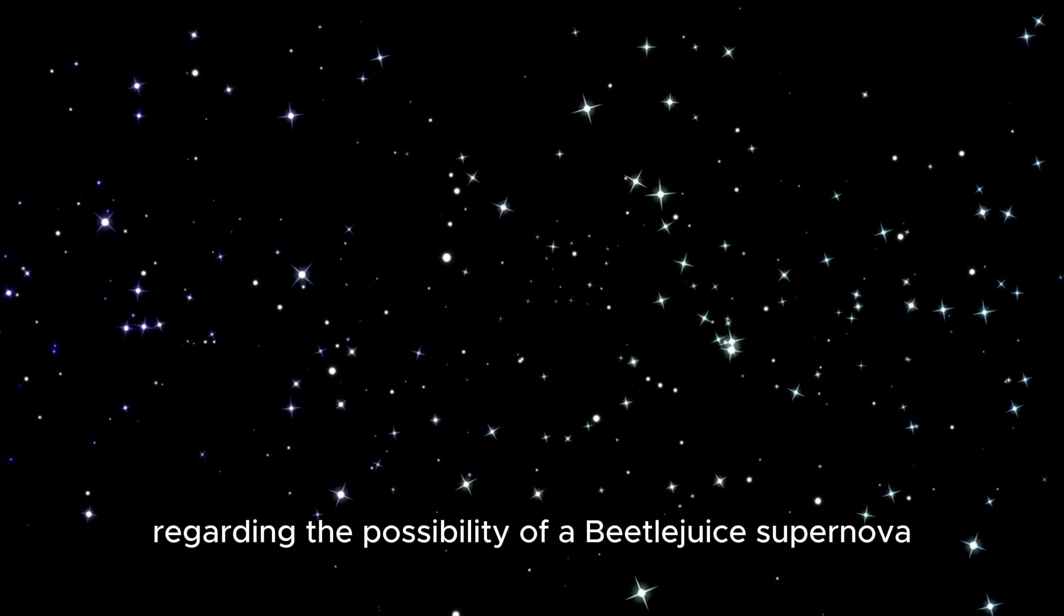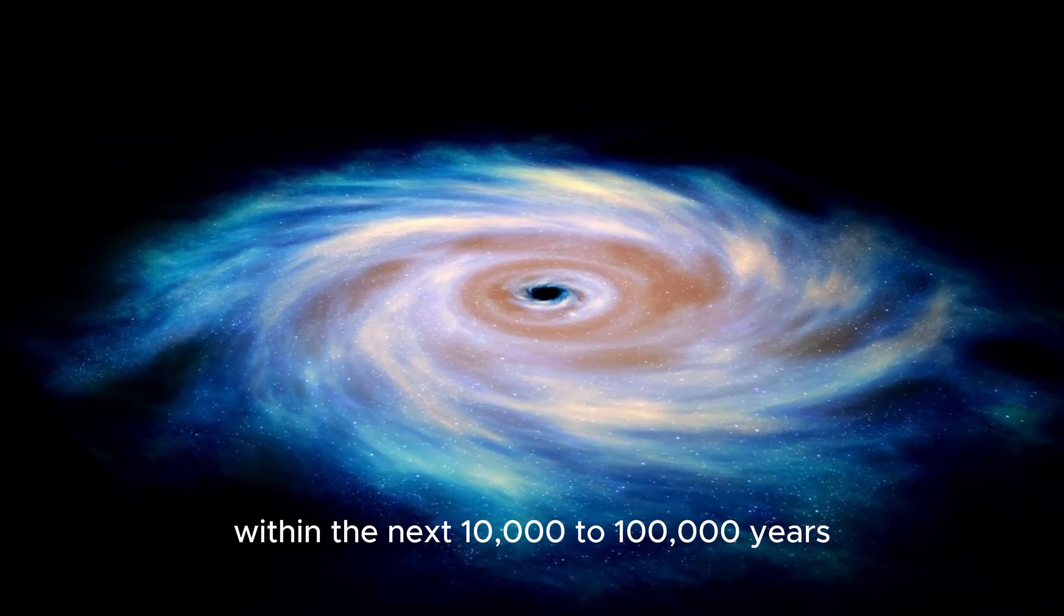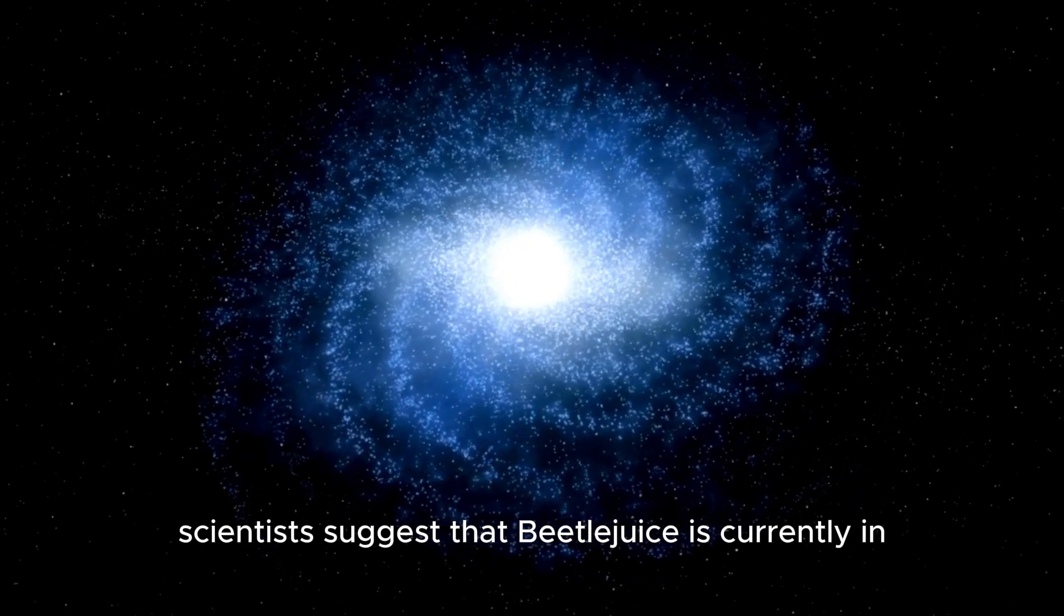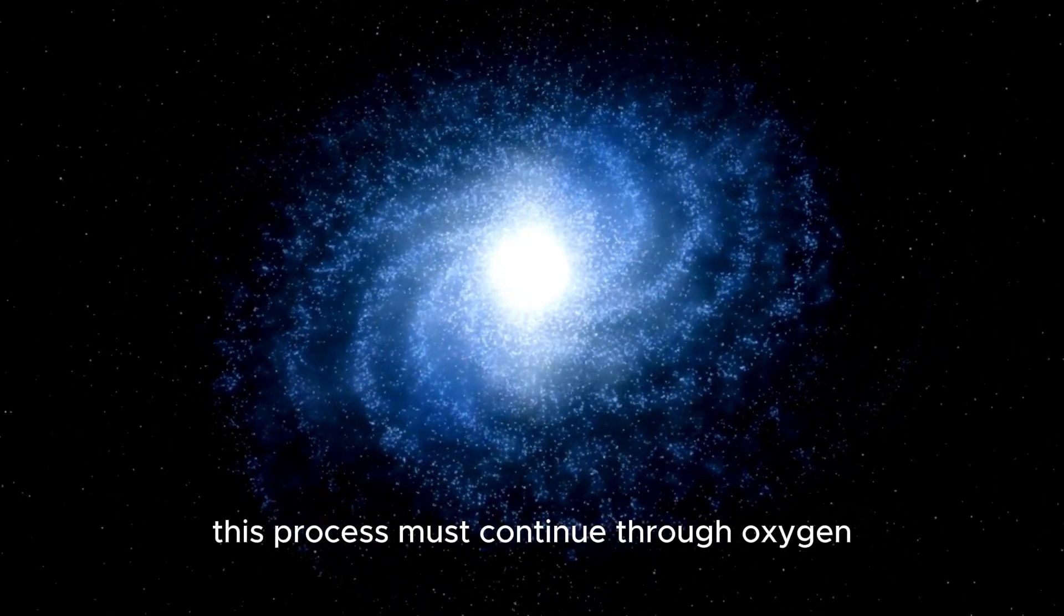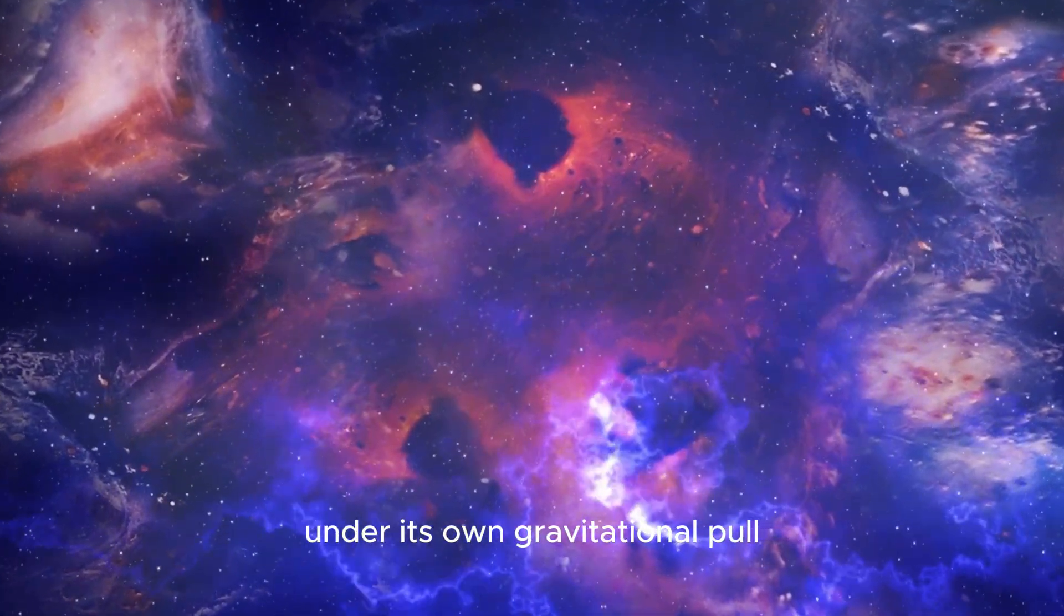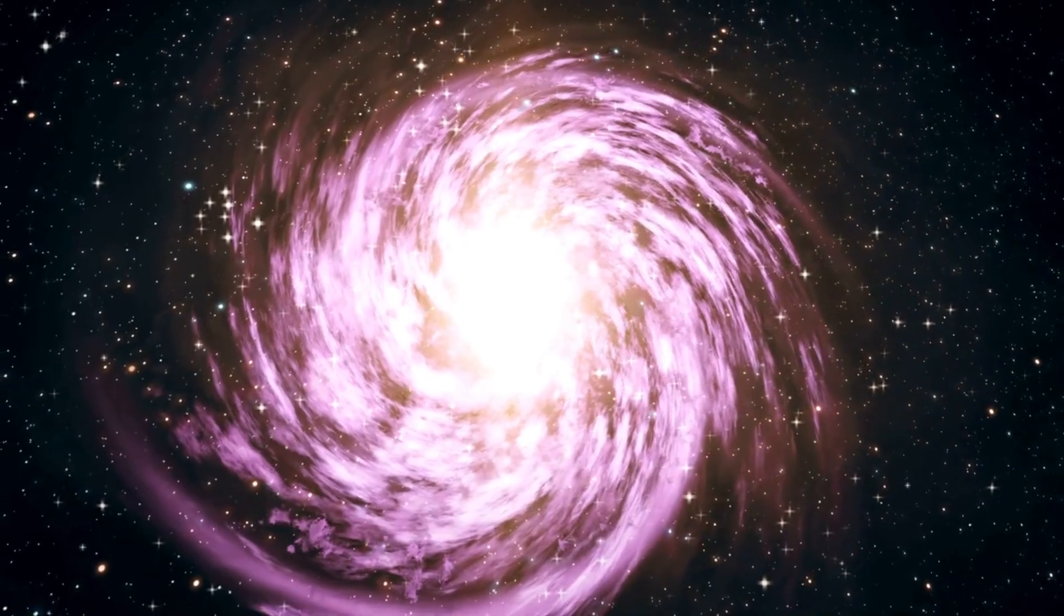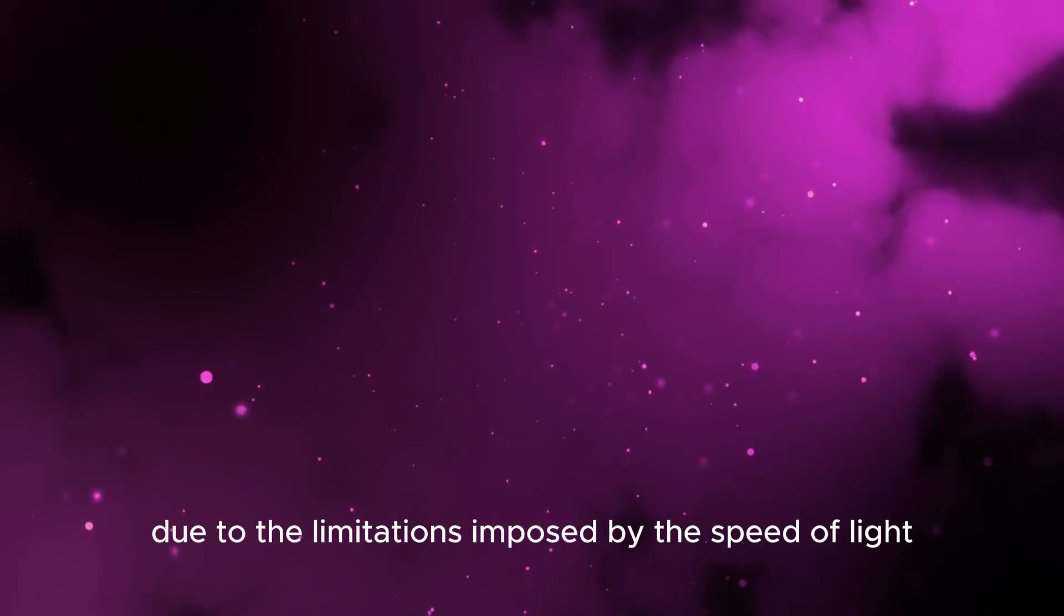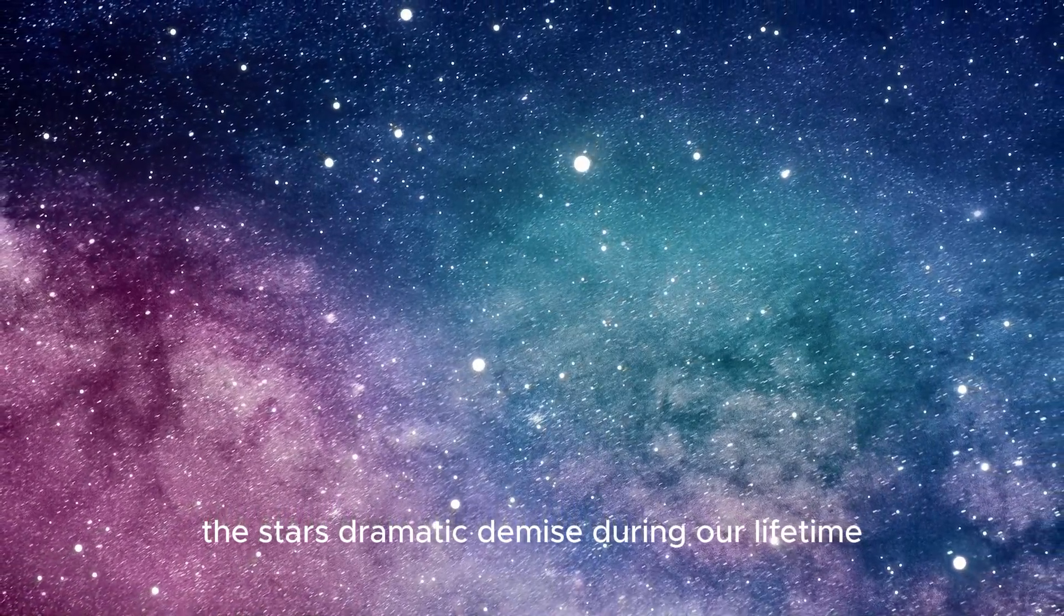Regarding the possibility of a Betelgeuse supernova, astronomers speculate that it could occur at any time within the next 10,000 to 100,000 years. Based on factors such as the star's color, brightness, size, and estimated age, scientists suggest that Betelgeuse is currently in the early stages of helium-to-carbon fusion. This process must continue through oxygen, silicon, and finally iron before the star's core collapses under its own gravitational pull, leading to a cataclysmic explosion. Since Betelgeuse is located 650 light-years away, any supernova event happening at present would only become visible to us after 650 years due to the limitations imposed by the speed of light. Therefore, it is highly unlikely that we will witness the star's dramatic demise during our lifetime.